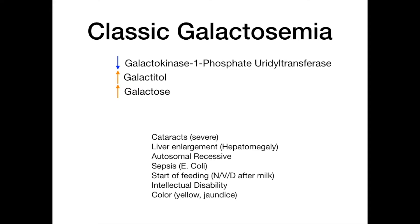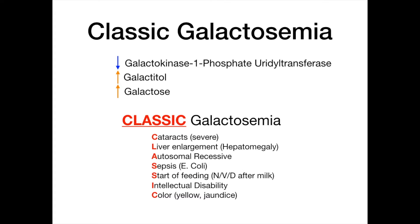To remember classic galactosemia, use the mnemonic CLASSIC: C for cataracts, L for liver enlargement, A for autosomal recessive, S for sepsis, S for start of feeding, I for intellectual disability, C for color changes (jaundice). The treatment is simply to remove galactose and lactose from the diet, since galactose comes from lactose upstream.